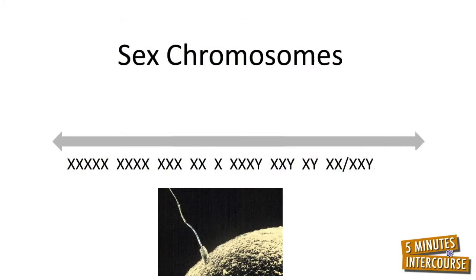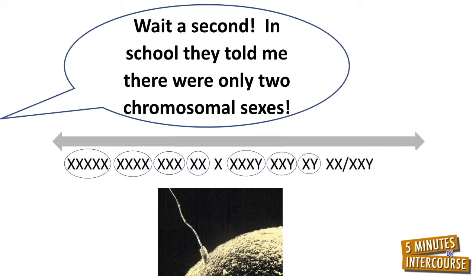Ingredient number one: sex chromosomes. Conception occurs when a single sperm and a single ovum come together to share their respective chromosomes, resulting in chromosomal sexes of quintuple X, quadruple X, triple X, double XX, single XY, double X double XY mosaic, or even a single X. So what chromosomal sex are you? Are you sure?